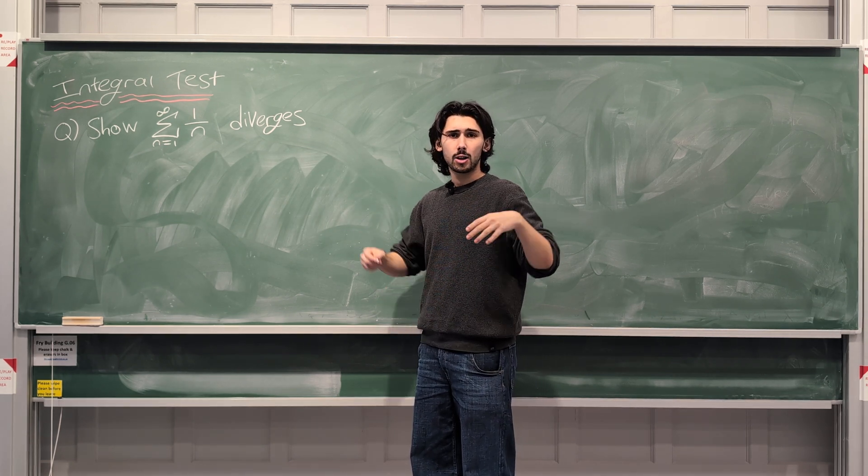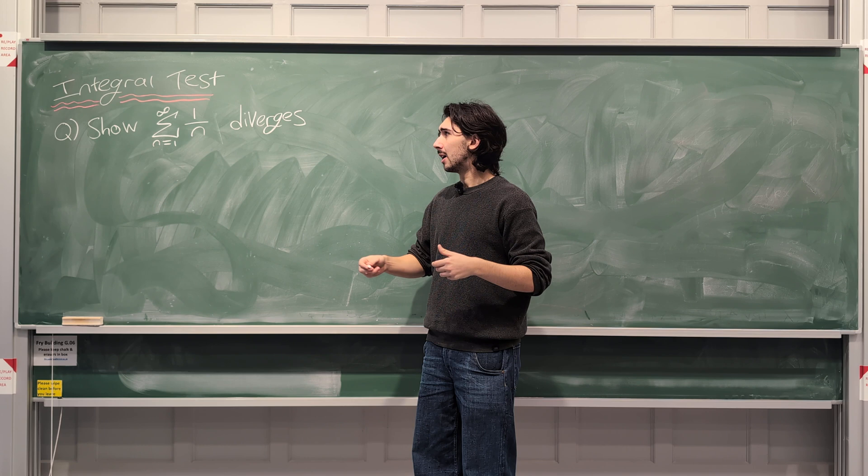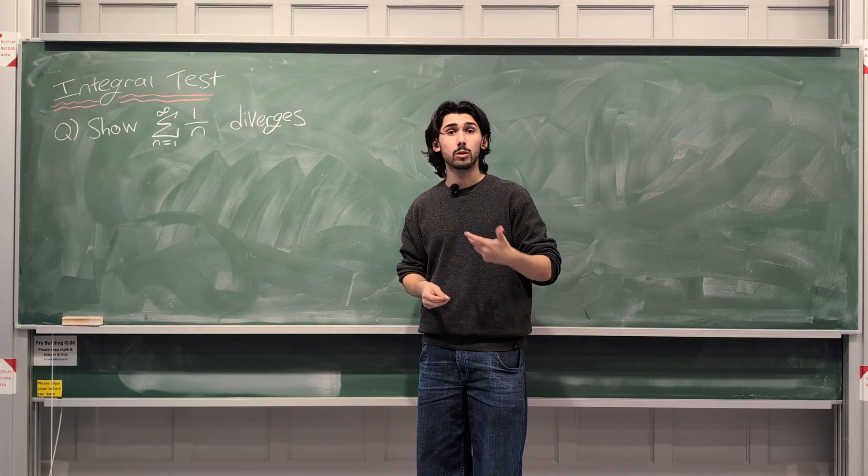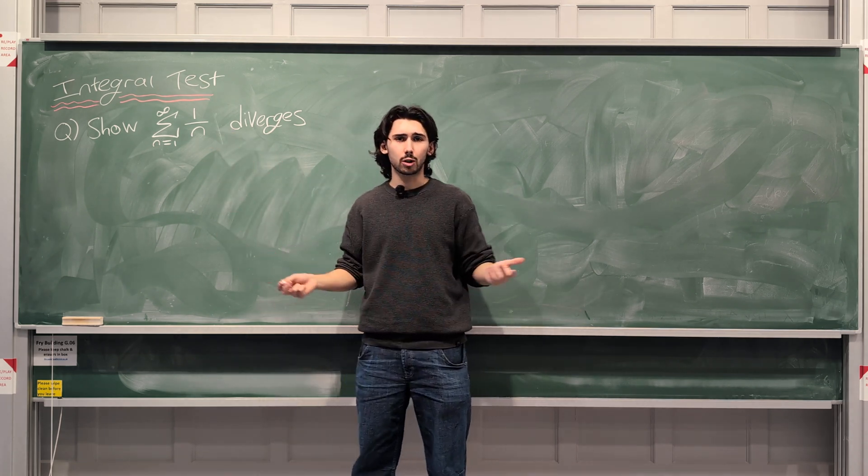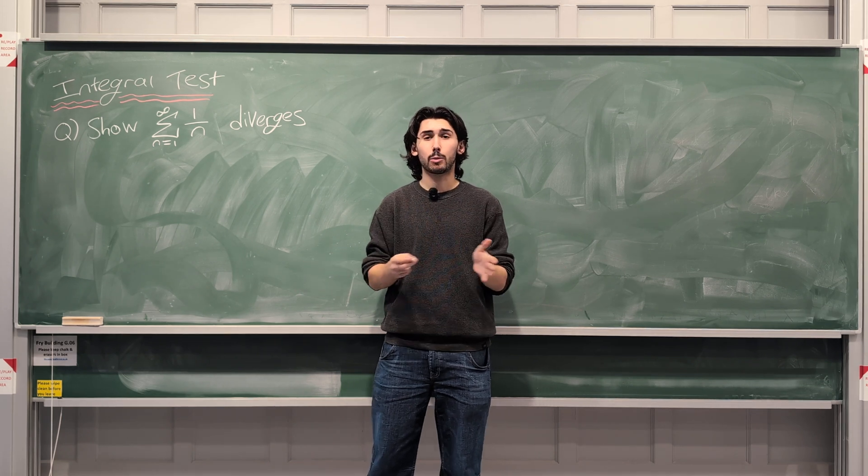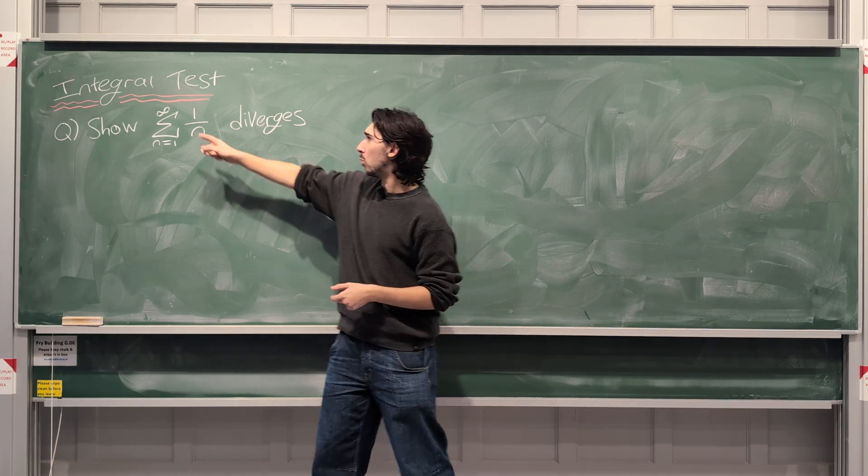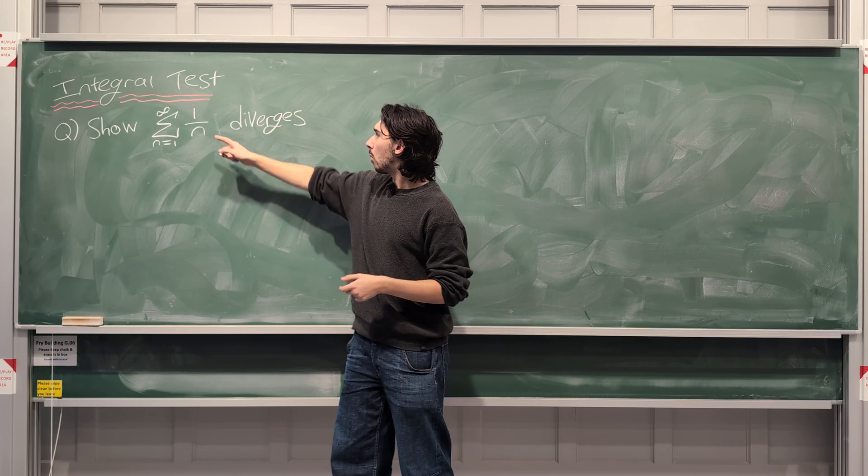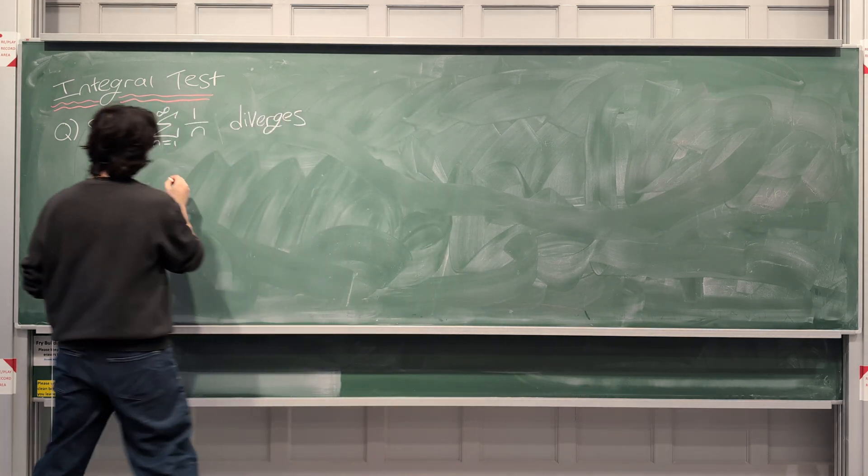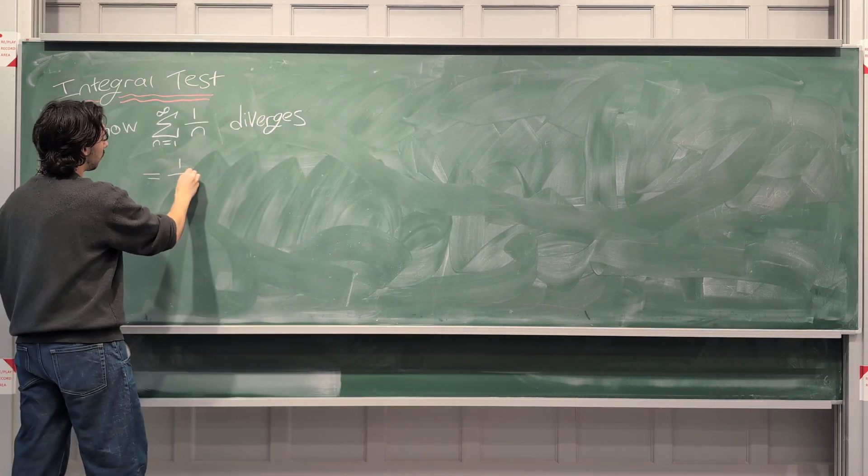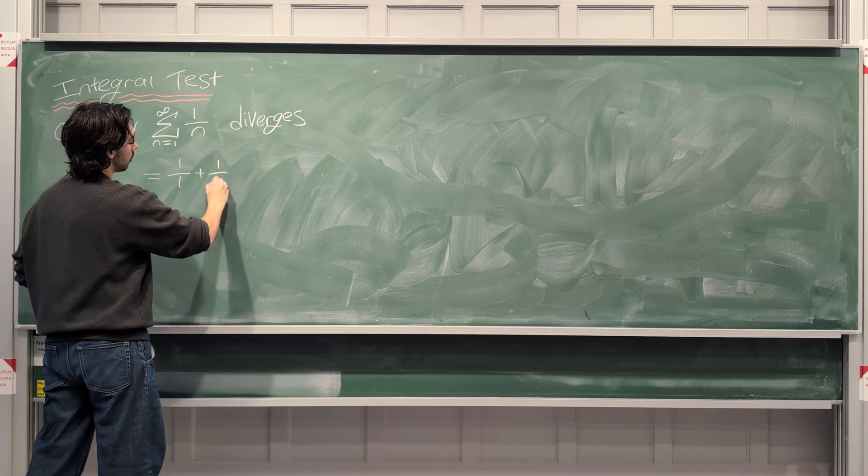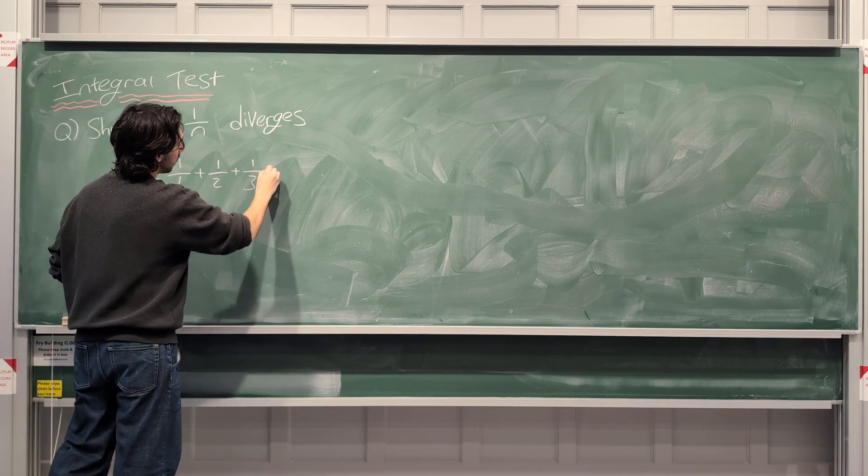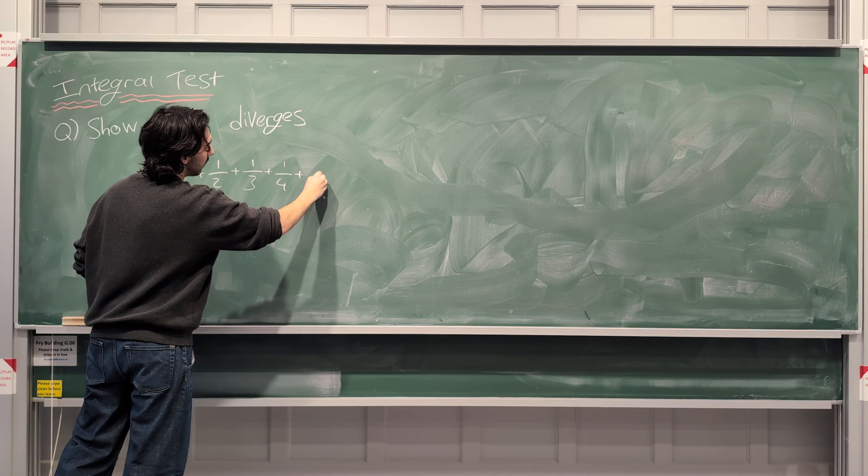By the way, in this entire playlist, every single video, of course we're going to be doing the sum to infinity. If we weren't doing the sum to infinity, then everything would just converge because you just add up a finite number of terms. So this will always be infinity here. Well, this sum here, this is the same thing as 1 over 1 plus 1 over 2 plus 1 over 3 plus 1 over 4 all the way up to infinity.